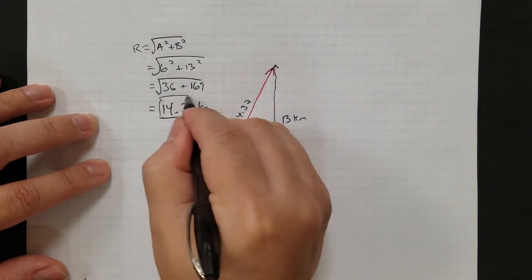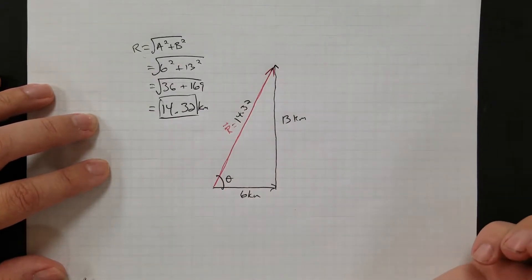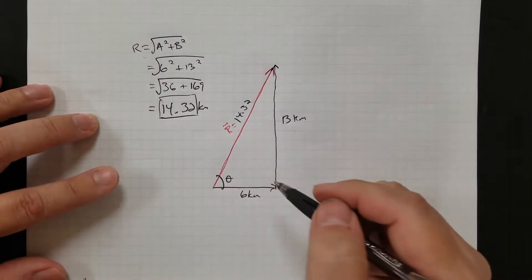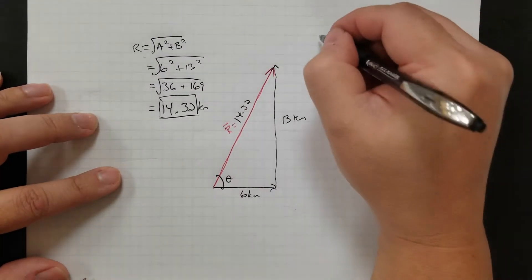So r is 14.32 kilometers. Okay, that wasn't too bad. So now I'm throwing this in there. I want to solve for the angle. Let's say I don't know the angle. How could we figure that out? Well, we know, if I don't know the angle, let's go to our trig function.